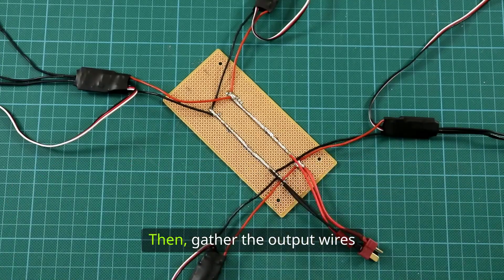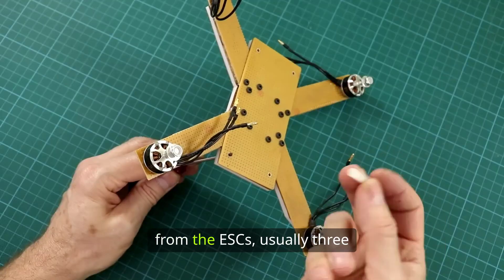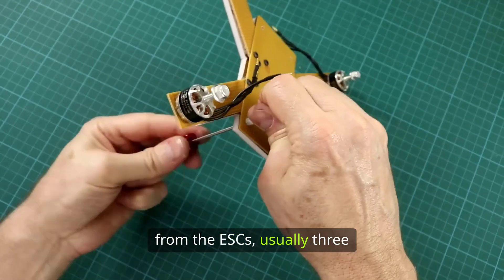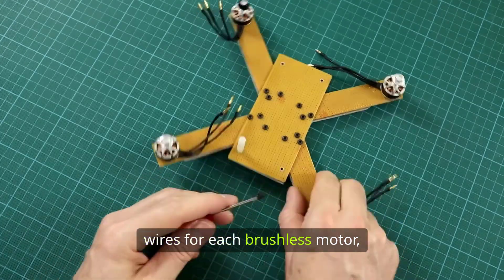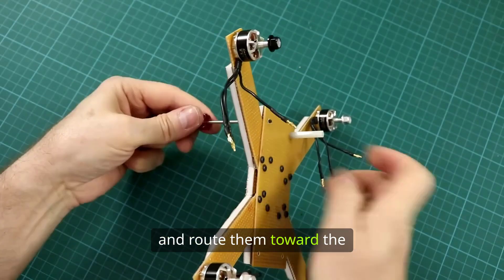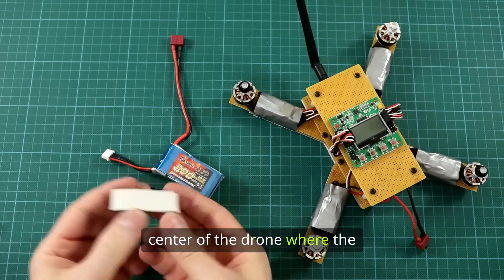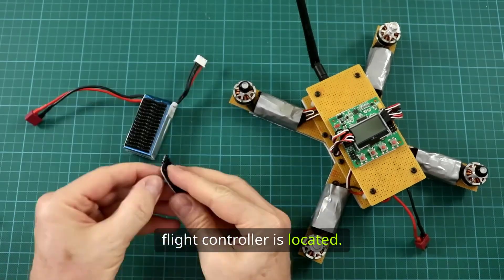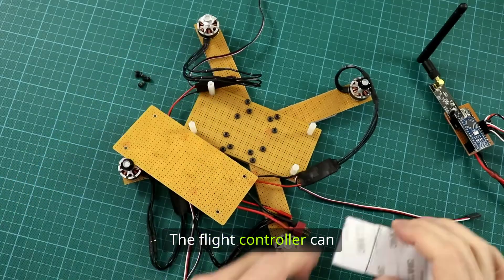Then, gather the output wires from the ESCs, usually three wires for each brushless motor, and route them toward the centre of the drone where the flight controller is located. The flight controller can be mounted on shock-absorbing pads or foam mounts to reduce the impact of vibrations.